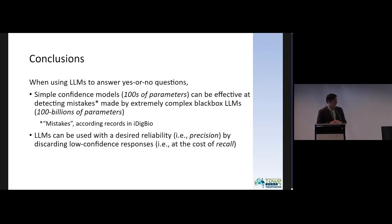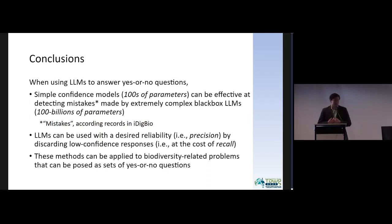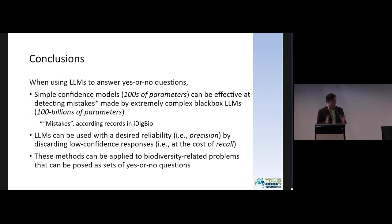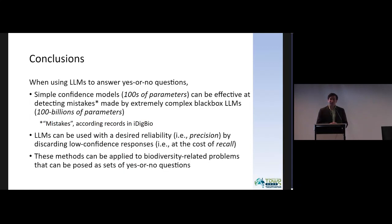In conclusions: first, we were surprised to see that a really simple model with only hundreds of parameters — our confidence model — can detect mistakes made by extremely complex models like ChatGPT 3.5, which has about 175 billion parameters. By "mistakes" we mean using iDigBio as a trusted source, which does contain mistakes, but here we trust everything it says. Second, we can increase the reliability of LLMs by discarding low-confidence responses, at the cost of getting fewer responses. Third, for biodiversity-related problems posed as sets of yes/no questions — simple binary problems — we can actually use LLMs with higher reliability than if we just trusted everything.